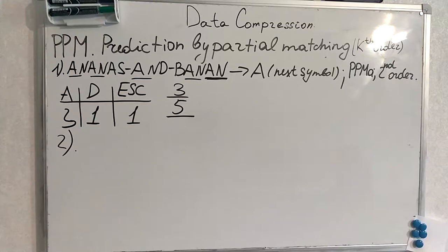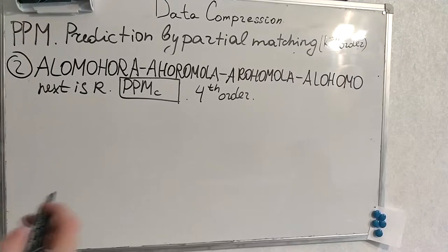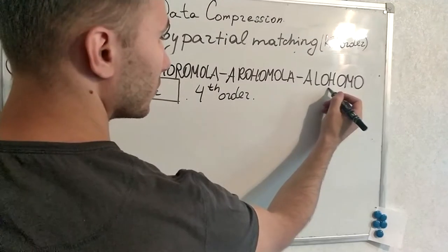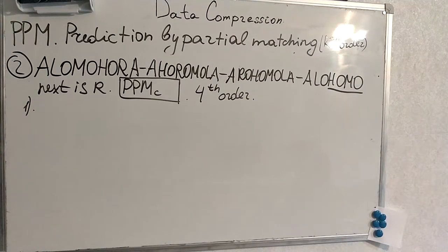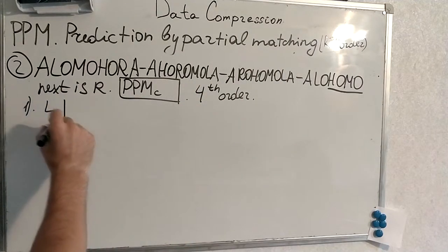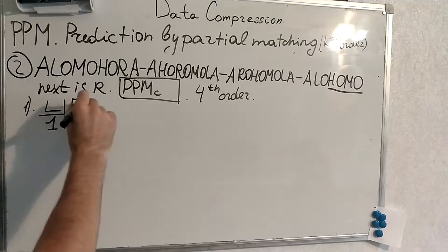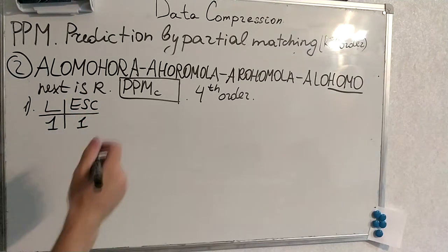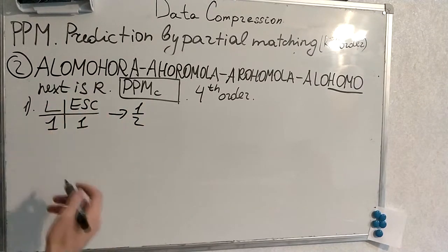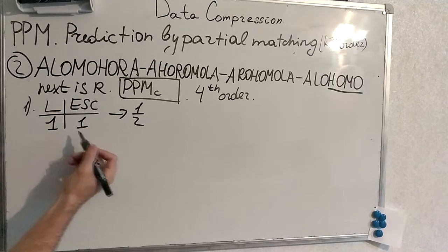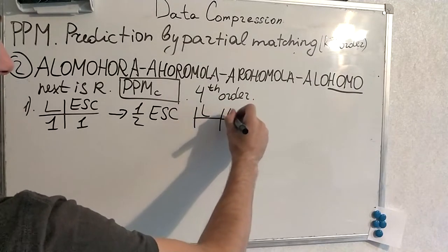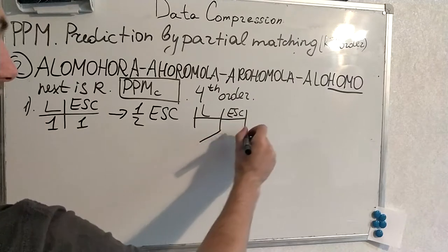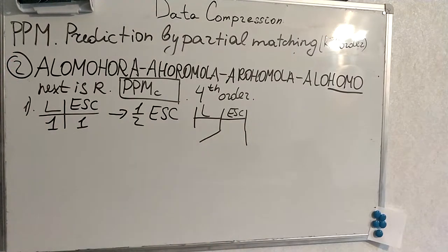The second example uses a long sequence with fourth-order PPM. On the first step, after the four-character context, we have only seen L. The counter for L is 1, and the counter for the escape symbol is 1. We encode the escape symbol with probability 1/2. We record this interval and continue encoding with it for arithmetic coding. We then exclude L and drop to the lower context.